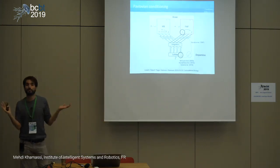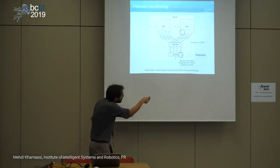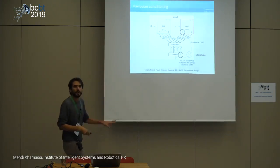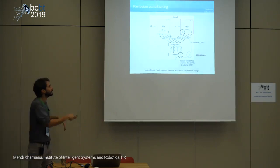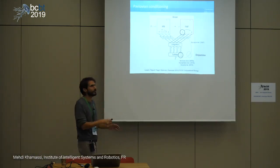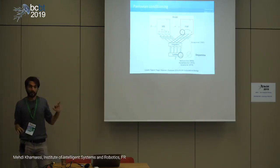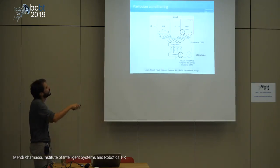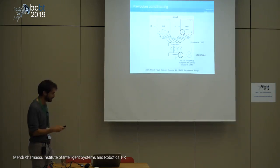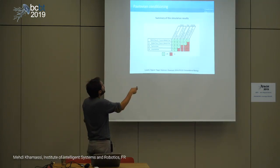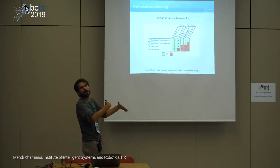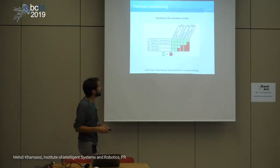Our hypothesis is that the brain of those animals coordinates different learning systems — modeled as model-based and model-free — and different animals rely more on one system than the other. The model-free system relies on dopaminergic reward prediction errors, but the model-based system can learn independently. We have also integrated the idea that dopamine modulates action selection — the exploration-exploitation trade-off.